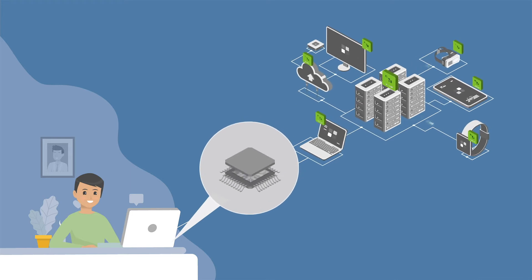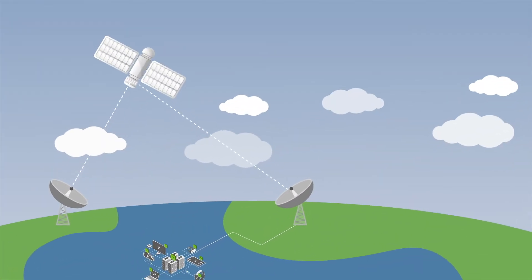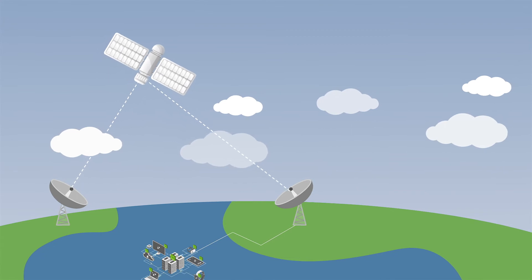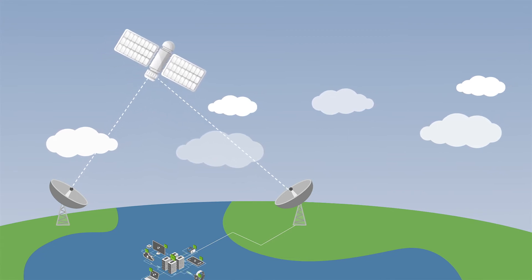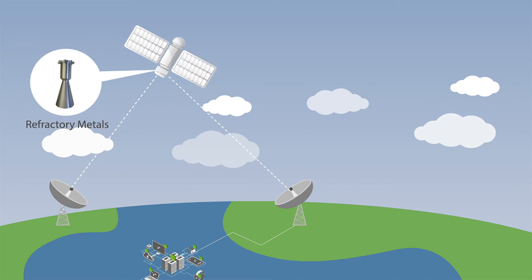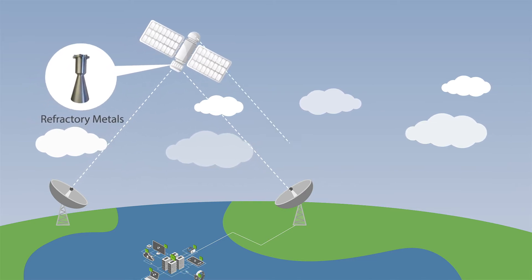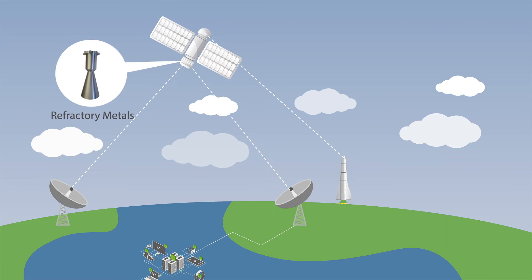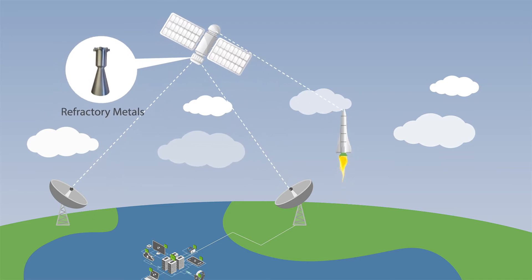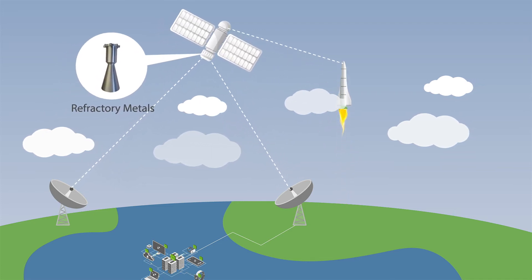Phones and computers also use tantalum in memory chips to store data. Able to withstand the highest temperatures and most extreme wear conditions, H.C. Stark Solutions' refractory metals are used as thrusters to help satellites maneuver in space, and their niobium alloys allow rockets to have enough propulsion to leave Earth's atmosphere.